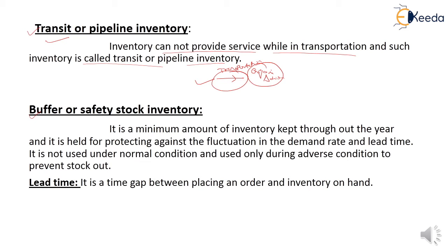What is buffer or safety stock inventory? It is a minimum amount of inventory kept throughout the year, held for protecting against fluctuation in demand rate and lead time. Lead time is the time gap between placing an order and having inventory on hand. Buffer or safety stock inventory is utilized during this lead time.